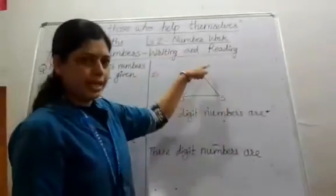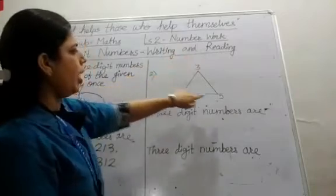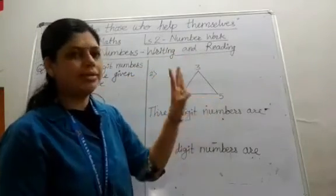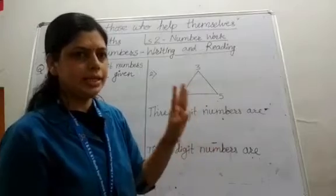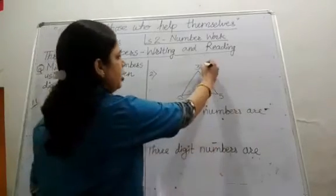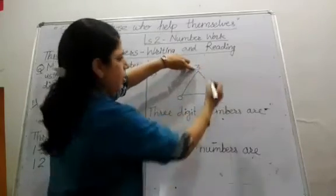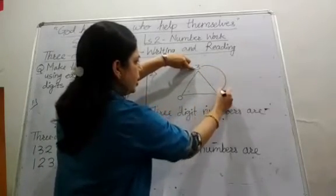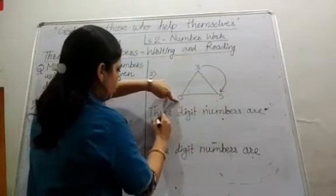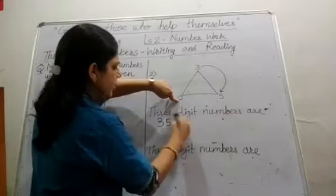A triangle is there and the numbers are 3, 0, and 5. Using these 3 numbers, we have to make 3-digit numbers. So let's start. First move in the clockwise direction, starting from 3. So our first number is 3, 5, 0 — means 350.